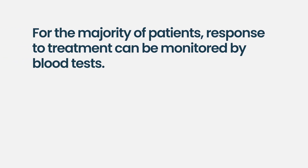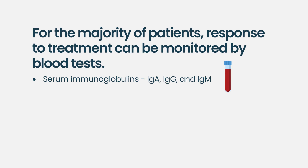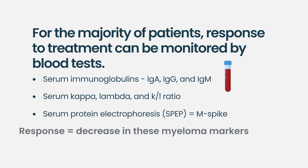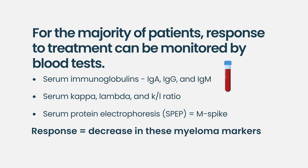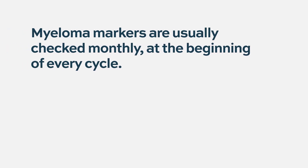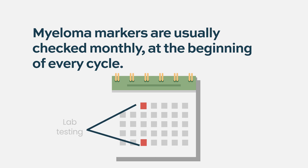Once therapy has started, the simplest way to assess response is via blood, for patients with secretory disease. A very small percentage of patients don't have secretory disease and don't produce immunoglobulins or light chains, but for the vast majority we can monitor disease via blood — checking serum immunoglobulins, serum free kappa and lambda light chains, and serum protein electrophoresis. The degree of decrease with each cycle tells you the sensitivity of disease to that treatment, and I typically check that monthly.